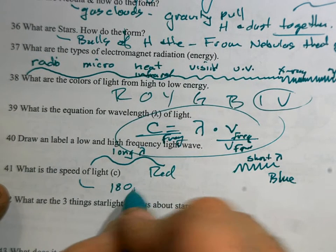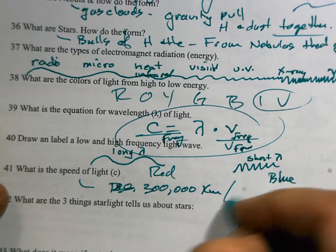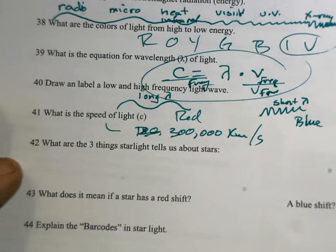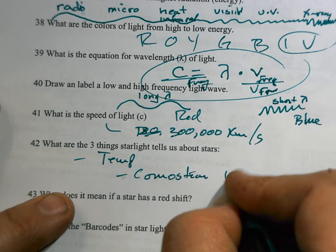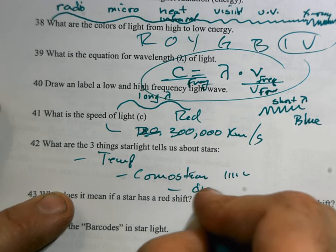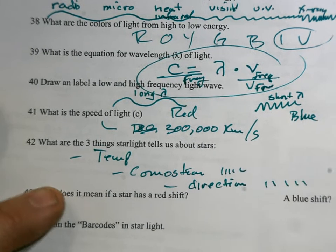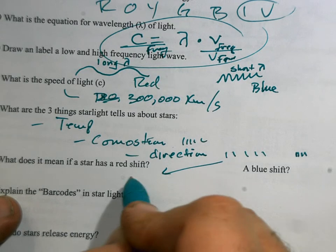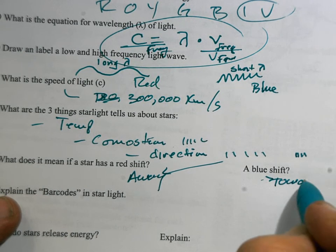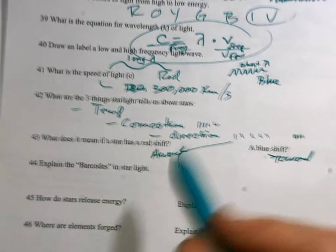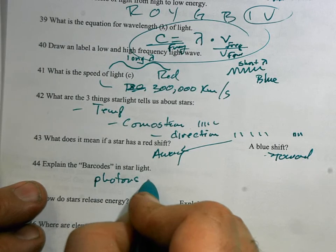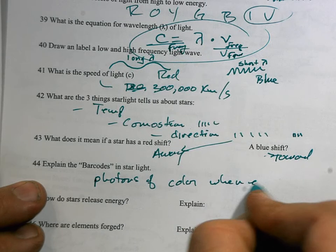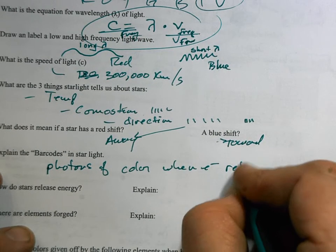Speed of light is 300,000 kilometers per second. That's not going to be on the final, so don't worry about it. Starlight can tell us three things about stars. It can tell us their temperature. It can tell us the composition of the stars. That's from the barcode patterns. And it can tell us direction. And that's from the Doppler shift if those waves are spread apart to the blue end of the spectrum. Or if those get squeezed really close together, you get a blue shift. And red shift going away from us. And a blue shift star is coming towards us. And the barcodes in light are just when the electrons are kicked off from these stars, they give off a little photon of light. So it's photons of color when electrons return back to their ground state. When electrons return to their ground state.